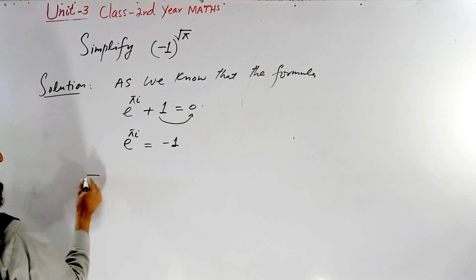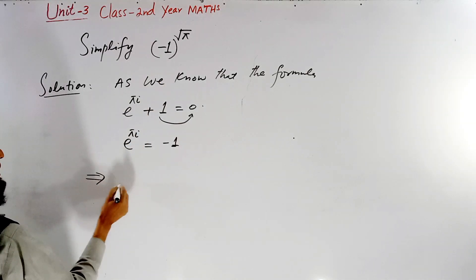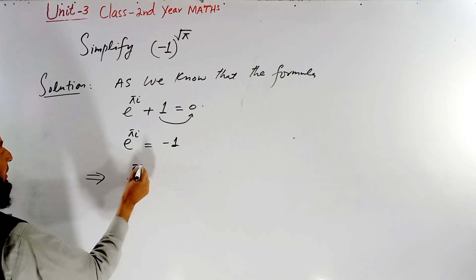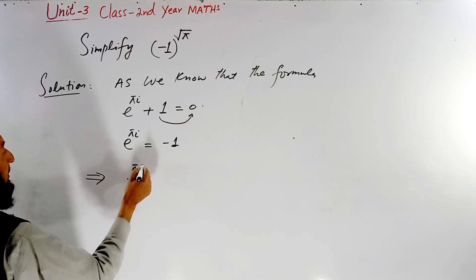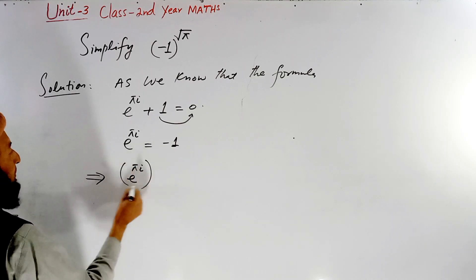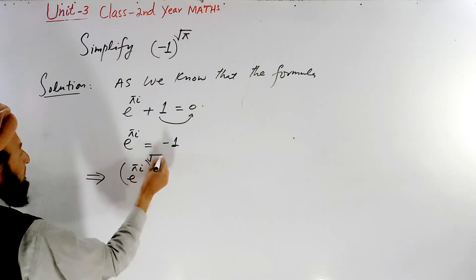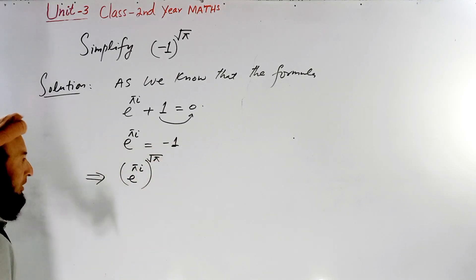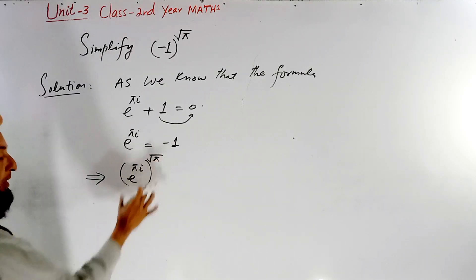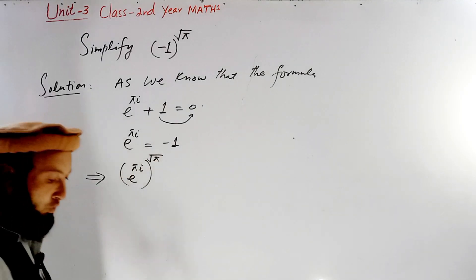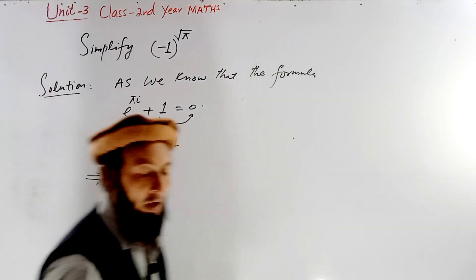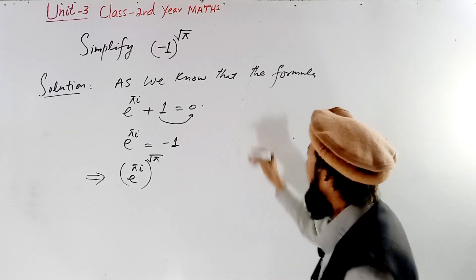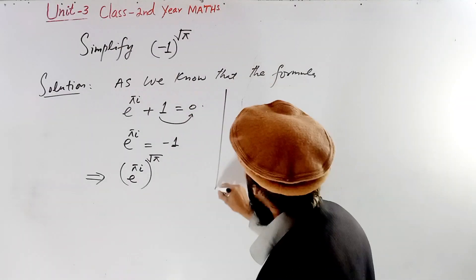We substitute the result, so e to the power pi i replaces minus 1, and the whole expression is then raised to the power of square root of pi. Now we apply the double exponent rule to simplify.